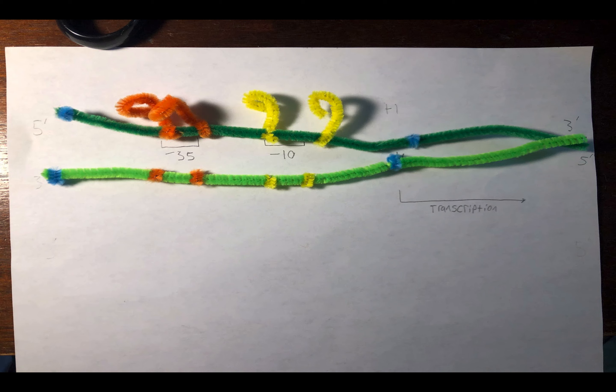In the promoter region, there are two important sequences known as consensus sequences. One is known as the negative 10 box and can be identified by its characteristic of having repeated TNA base pairs, known as the TATA box. Upstream from this sequence is the minus 35 region.